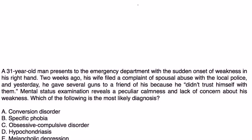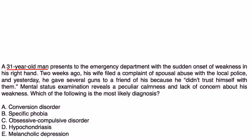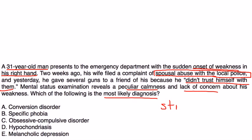Let's look at a clinical vignette: a 31-year-old man presents to the emergency department with sudden onset of weakness in his right hand. Two weeks ago, his wife filed a complaint of spousal abuse with the local police, and yesterday he gave several guns to a friend because he didn't trust himself with them. Mental status exam reveals a peculiar calmness and lack of concern about his weakness. The trouble with police likely caused stress, and extensive testing would show nothing medical — fitting the picture of conversion disorder.